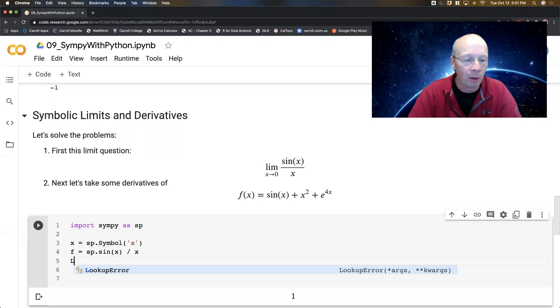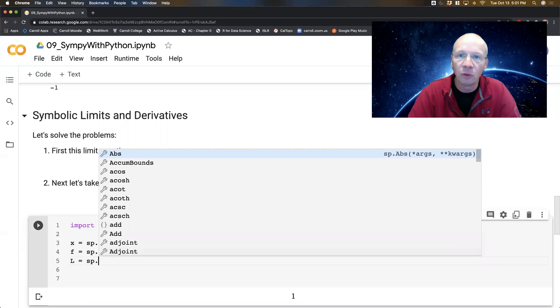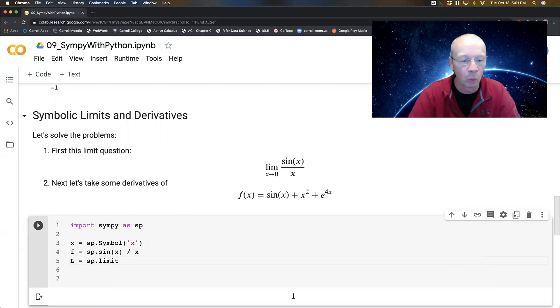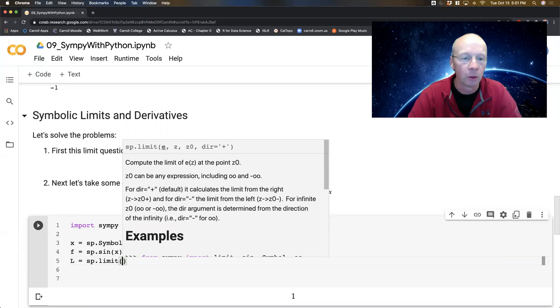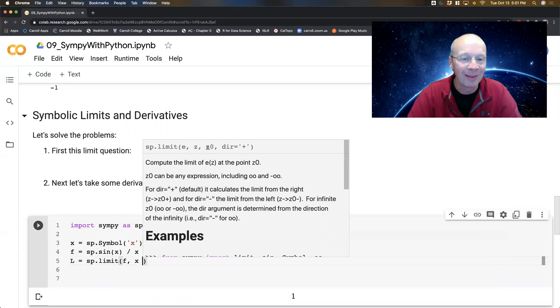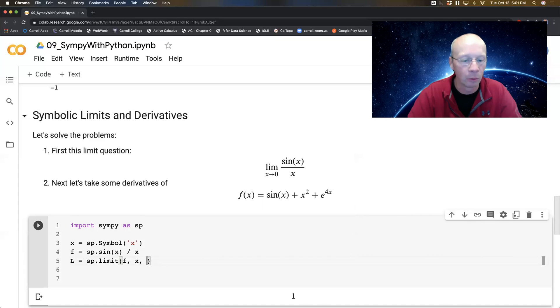So now I'm going to do the limit question. If I do L for limits is SP dot - now it's designed to do symbolic calculations. So I'm going to guess that sure enough, if I start typing the word limit, there it is. And I want the limit of the function F as X goes to, and what did I type? It goes to zero.